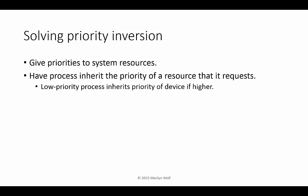We can solve priority inversion by changing the way we assign priorities. Basically, a process can inherit the priority of the resource that it requests. So a low-priority process would temporarily get a higher priority, ensuring it will be able to execute long enough to finish its work with the shared resource.